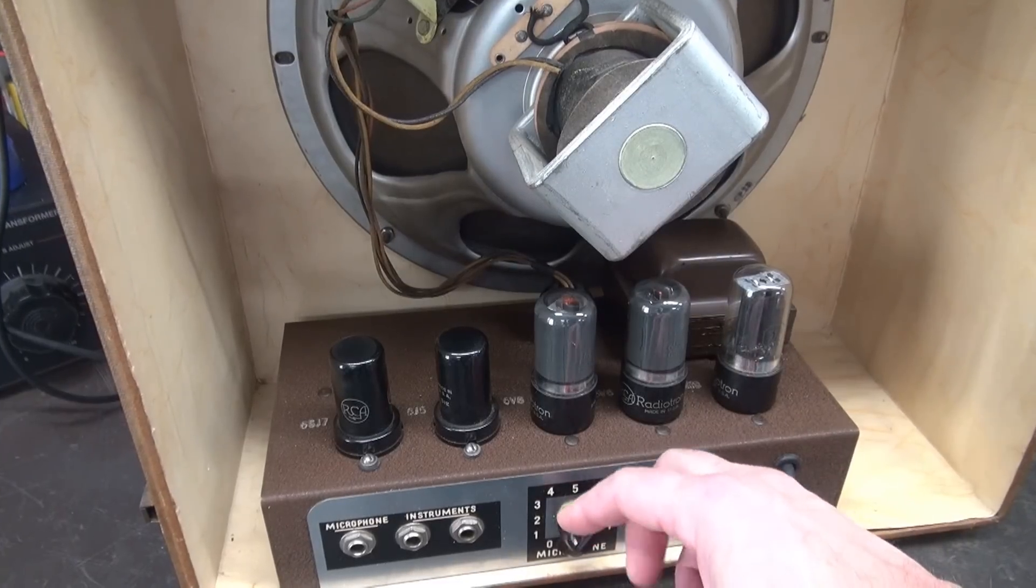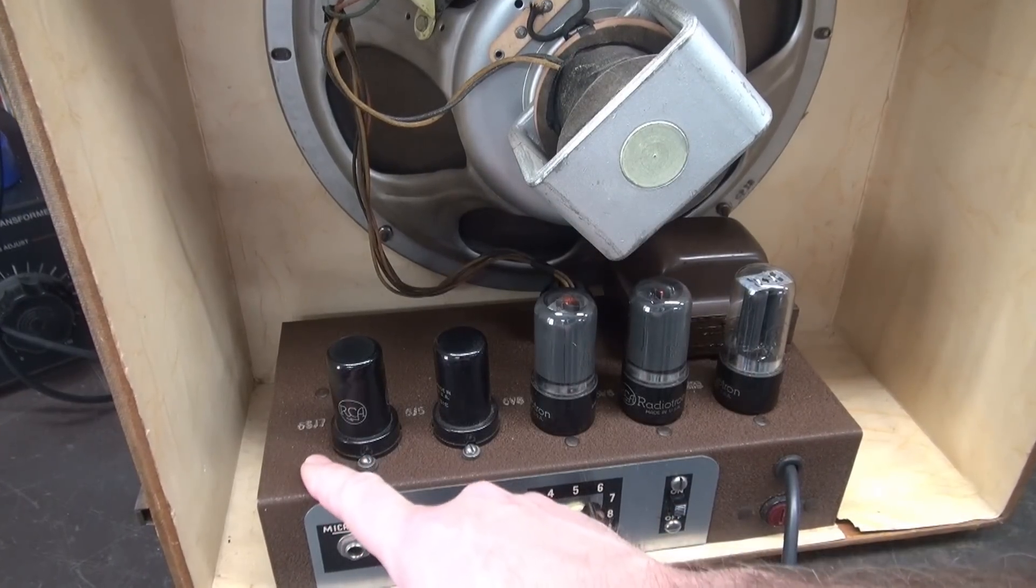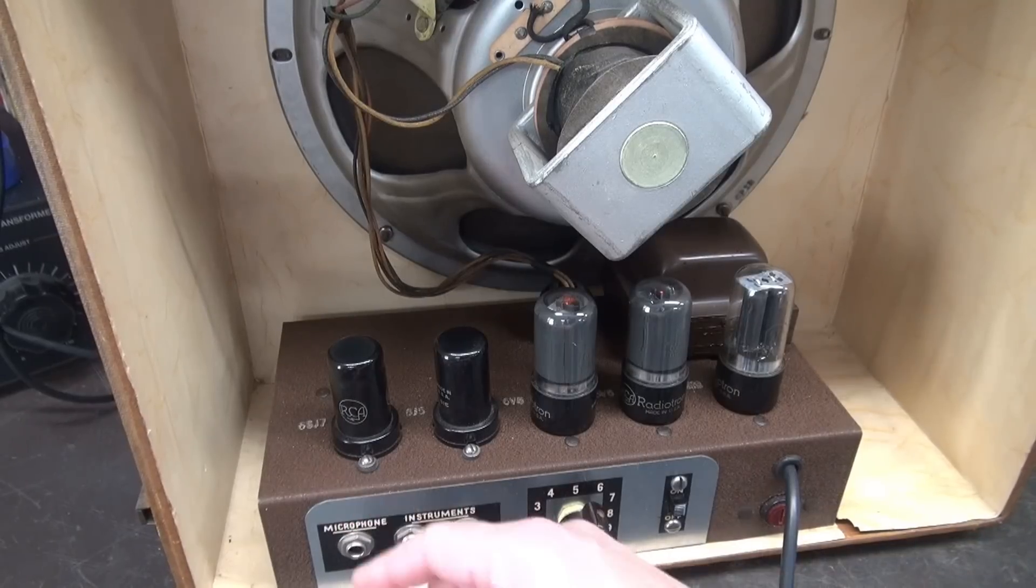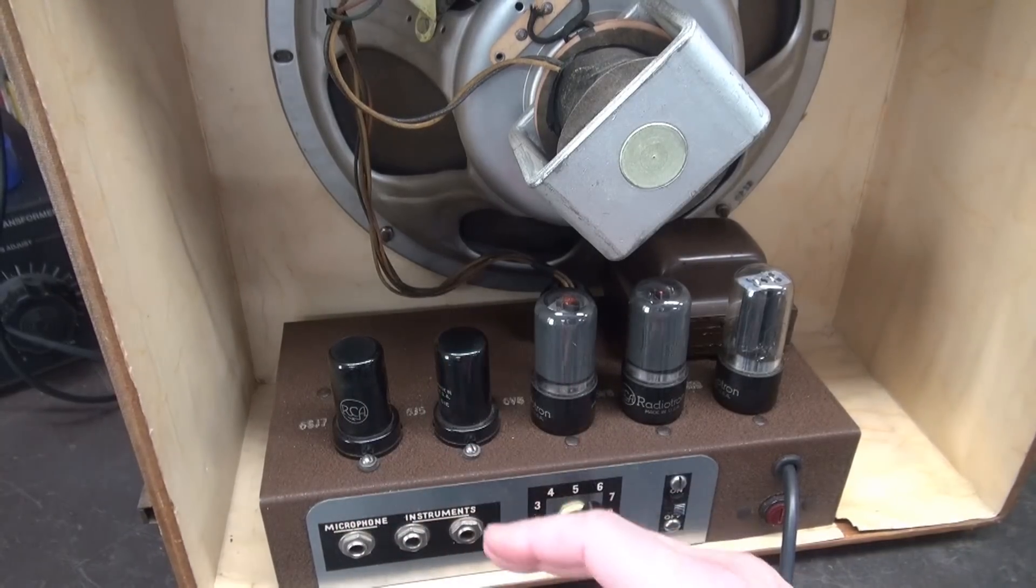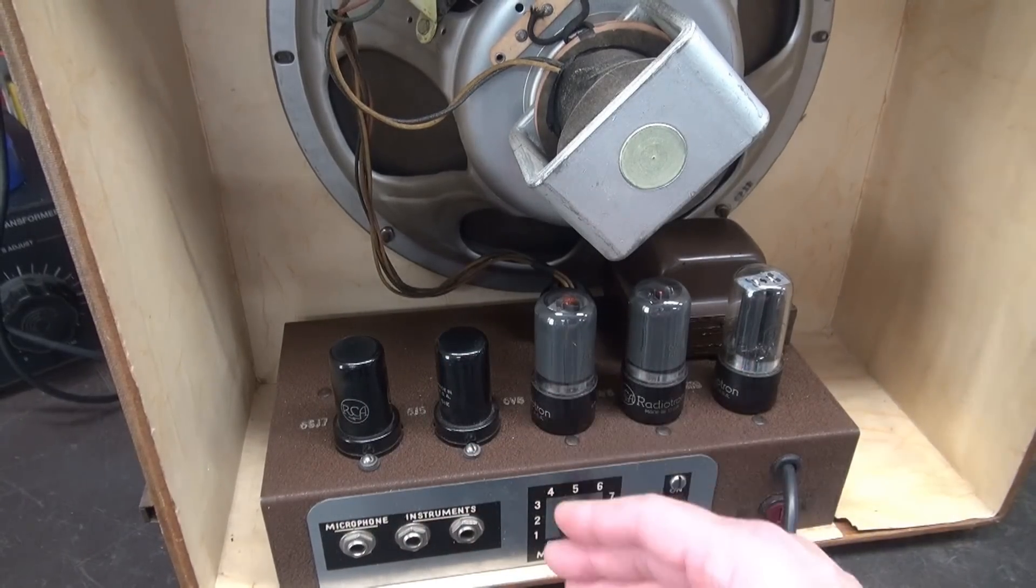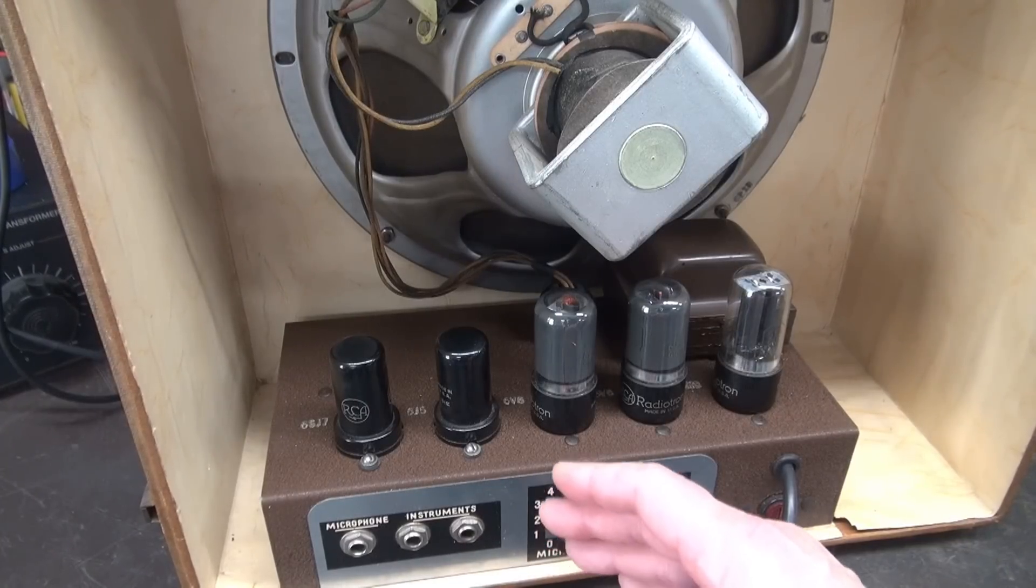The volume pot actually feeds the input to the 6SJ7, and they only used two of its terminals. It's actually not grounded, so it can't pull the signal to ground. I'll show you that in the original schematic.